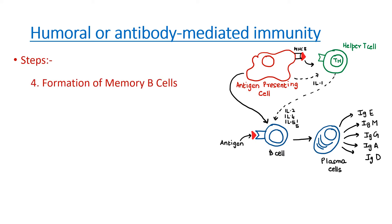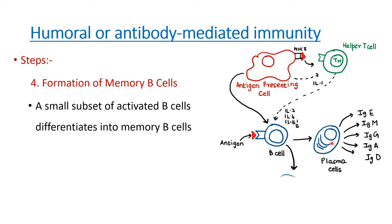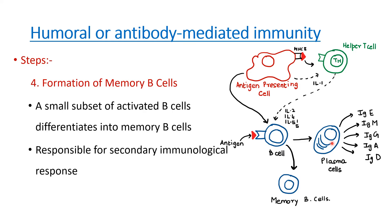The final step is formation of memory B cells. Activated B cells are not only converted to plasma cells but also to memory B cells, so that when the same antigen causes a subsequent infection, there is an enhanced response. These memory B cells are responsible for the secondary immunological response.